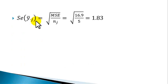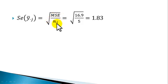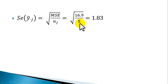Computing the standard error of each treatment mean using the formula: square root of mean square for error divided by n_j. Here, there are equal numbers of observations under each treatment, with n_j equals 5. From the ANOVA table, mean square for error is 16.9. So the standard error of mean for each treatment is the square root of 16.9 divided by 5, which equals 1.83.